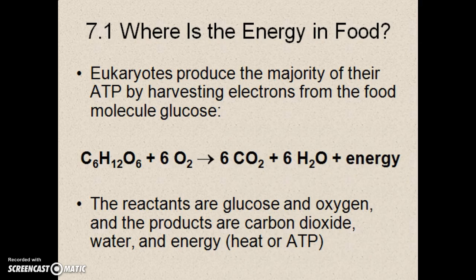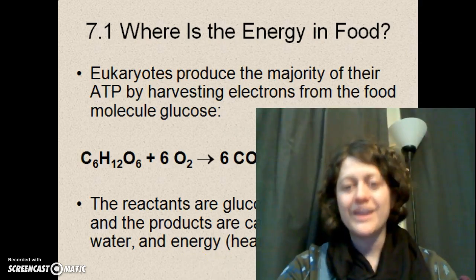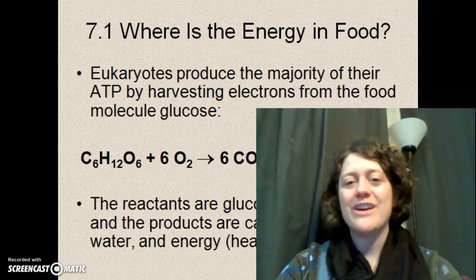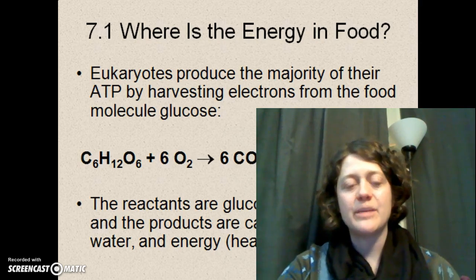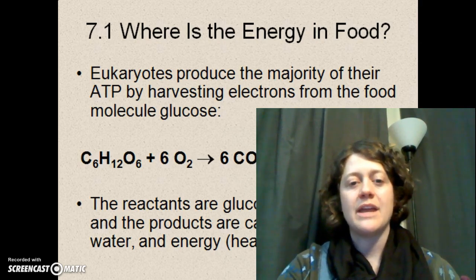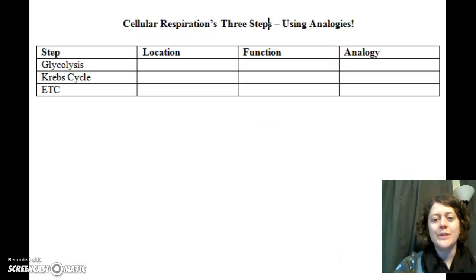Our cells export these products — CO₂ and water — and those molecules are then used by autotrophs, such as plants, algae, and photosynthesizing bacteria, to make their own food and subsequently oxygen as a byproduct. It's a really nice relationship between photosynthesis and cellular respiration. To make this more understandable, we're going to move to some analogies using a document that will be posted on Blackboard.